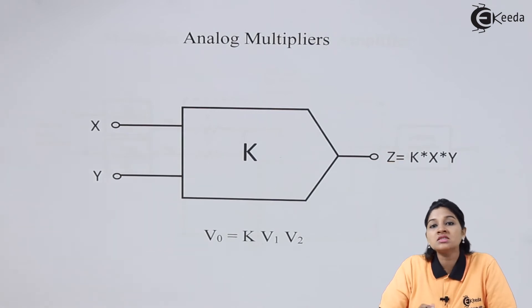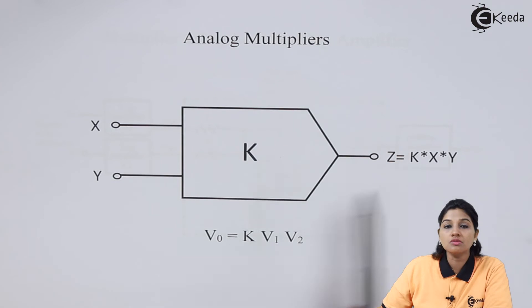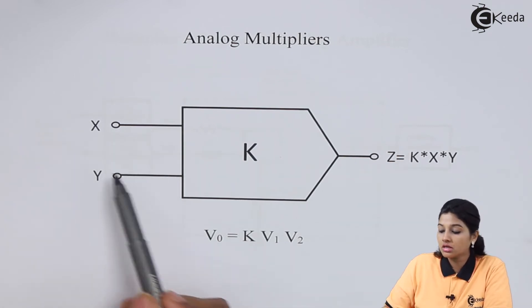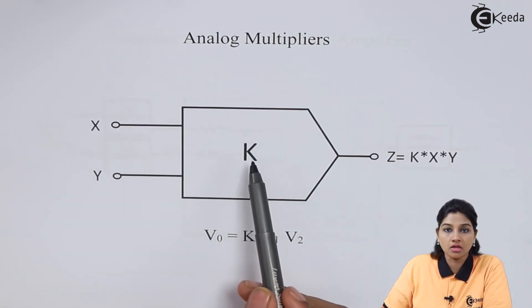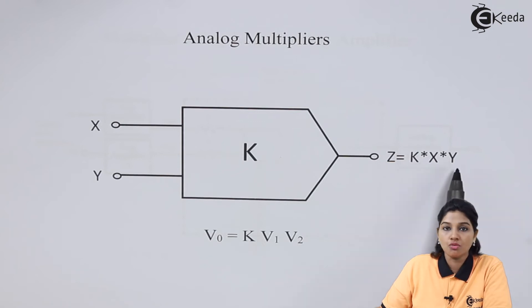Therefore, as its name indicates, the output, that means Z, is equal to multiplication of input signal along with Scaling Factor K. So Z is equal to K into X into Y.